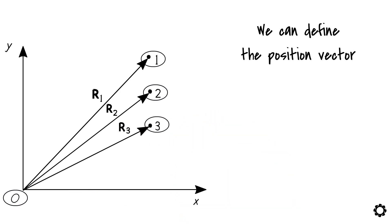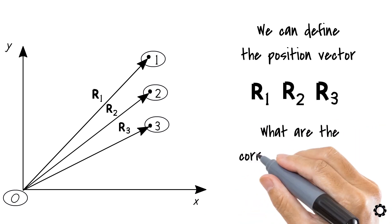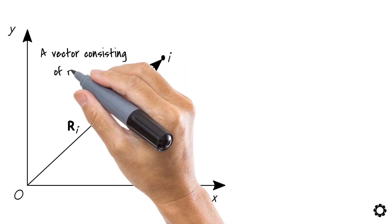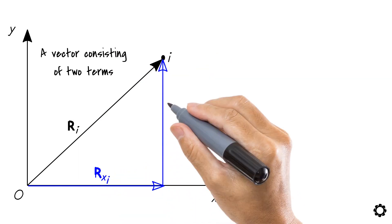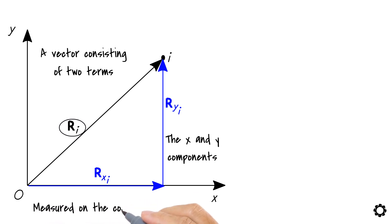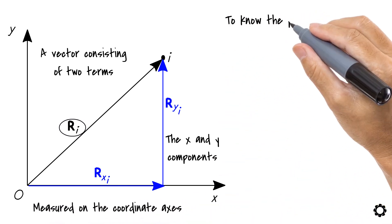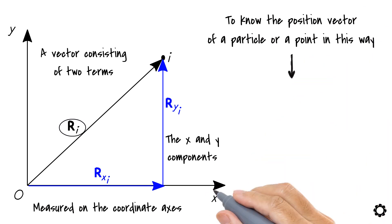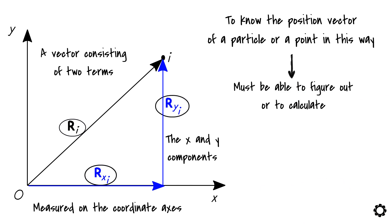But wait, this is not funny at all. We ended up with three letters representing the names of the vectors, but what are the corresponding values, you might ask? How do I calculate them? In this case, the position vector ri, to write it in general form, is a vector consisting of two terms, the term rxi and ryi, which are the x and y components of the vector ri measured on the coordinate axis. To know the position vector of a particle or a point in this way, you must be able to figure out or to calculate these x and y components.